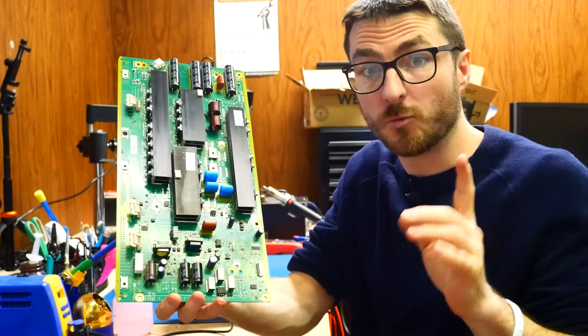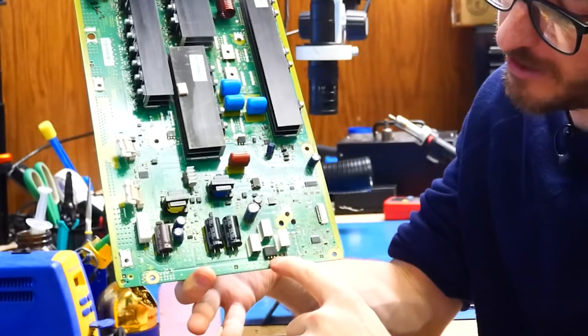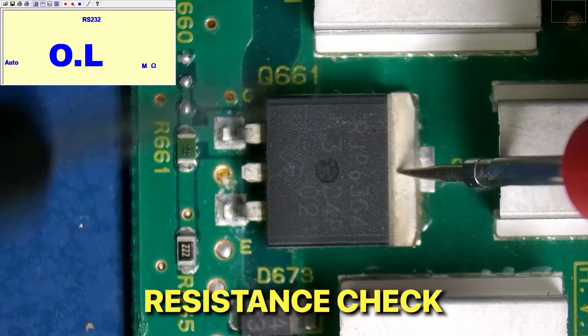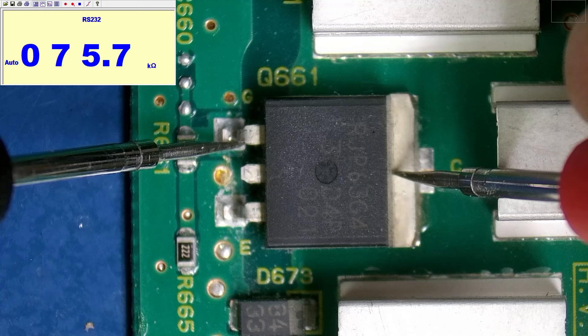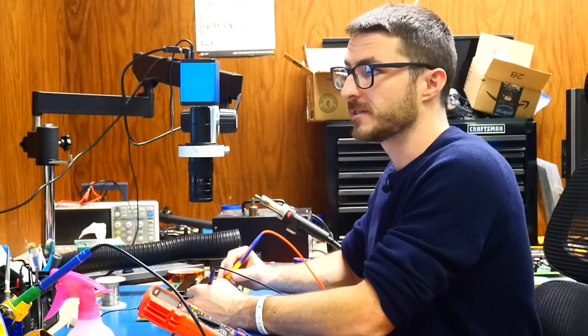Now there is actually one more component that I want to check, and it is on the front side. It is all the way down here. So same thing, we'll do a resistance check, and we're getting about 75 kilo ohms, and 83 on the other leg. So I would say this one is okay.